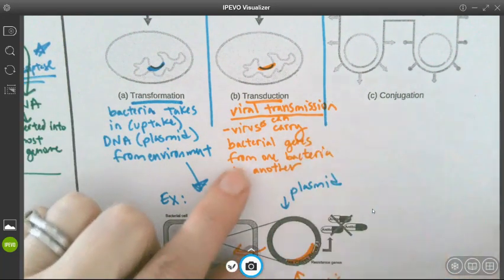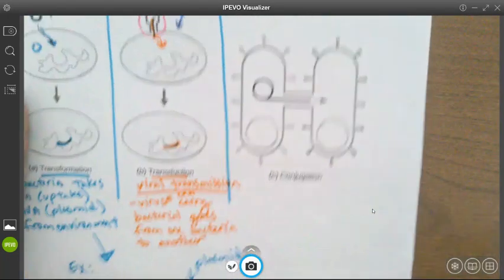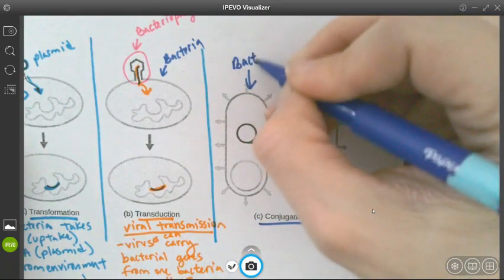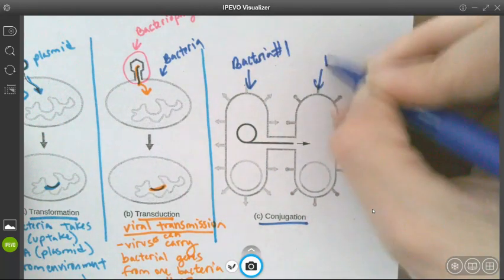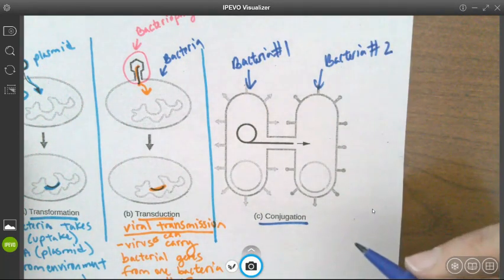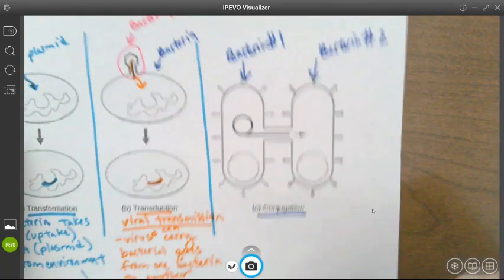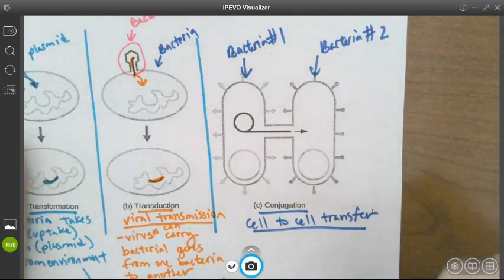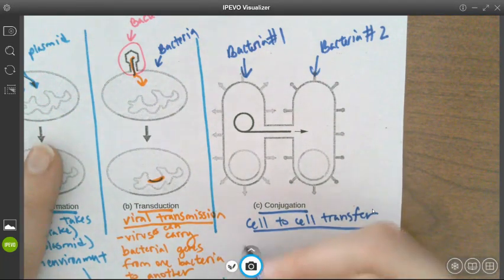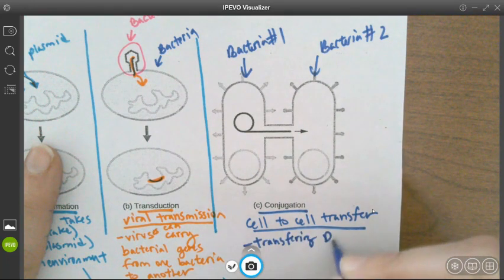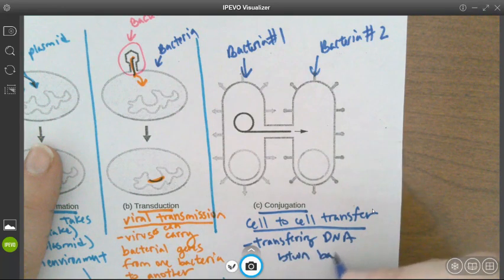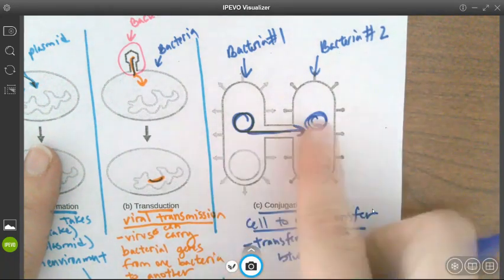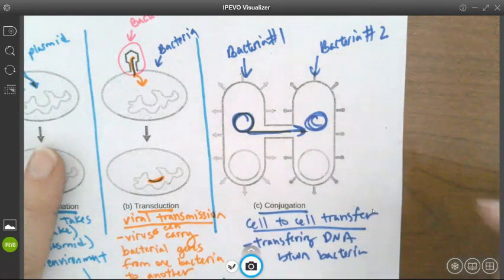And I actually want to go back to this in just a second when we talk about viruses. The last example right here is conjugation. Conjugation is when this is like bacteria number one, and this is bacteria number two. Conjugation is when it's a cell-to-cell transfer. So basically in a cell-to-cell transfer, we're transferring DNA between bacteria. So this plasmid is being copied and a copy is being sent to this bacteria. This is helpful when bacteria want to transfer antibiotic resistance to each other.